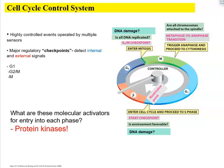Once the cell passes through the restriction point, the DNA is going to be replicated. This is the point of no return — the cell will have to go on and divide. It finishes preparation for division in G2 stage, then enters mitosis. There is another checkpoint here checking whether DNA is replicated correctly, replication is complete, and checking for DNA damage.